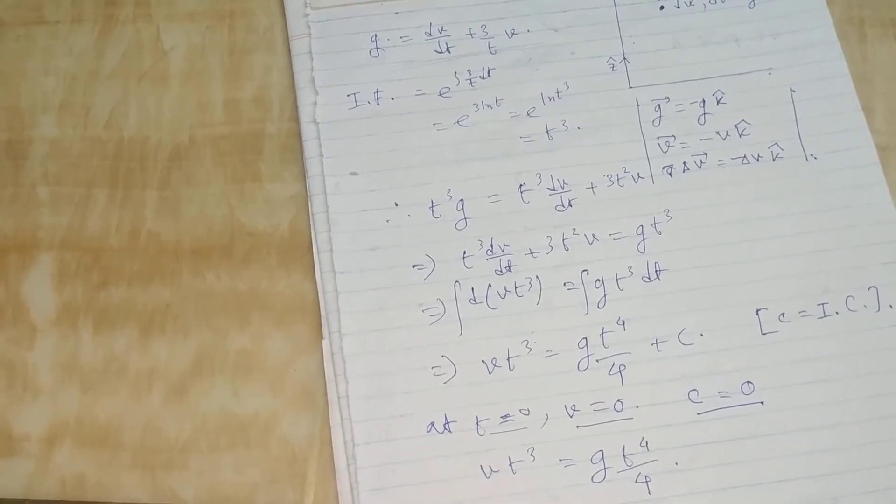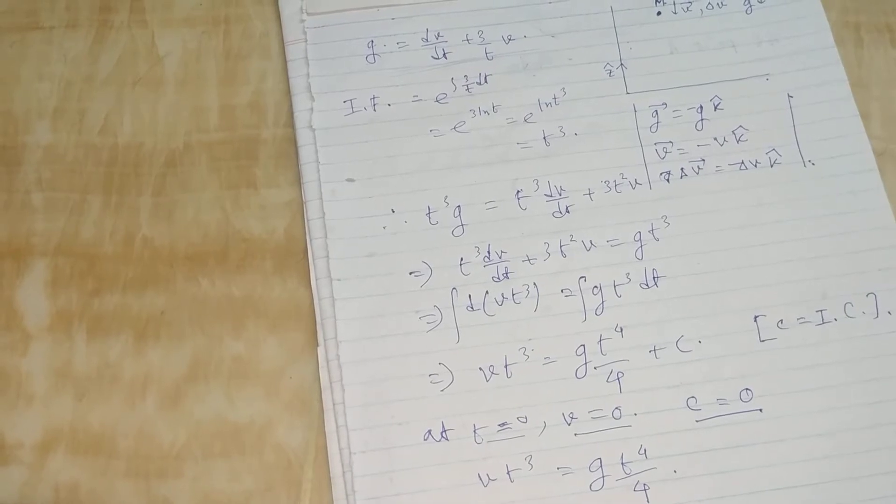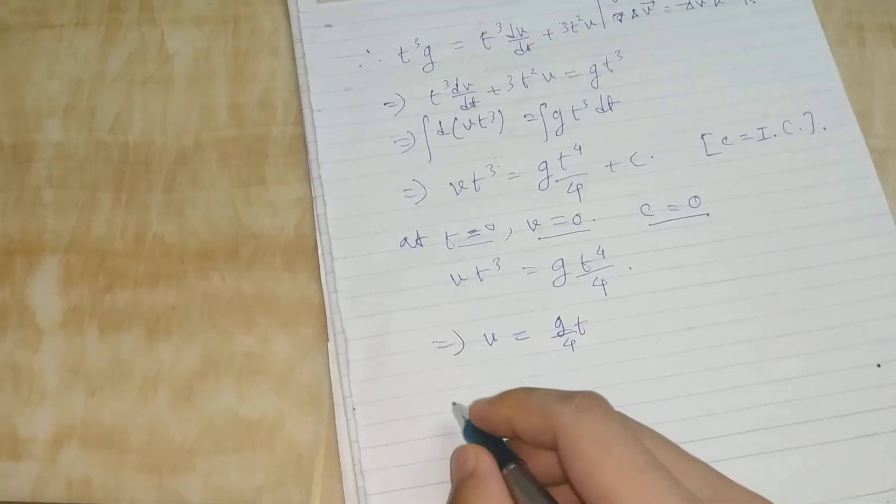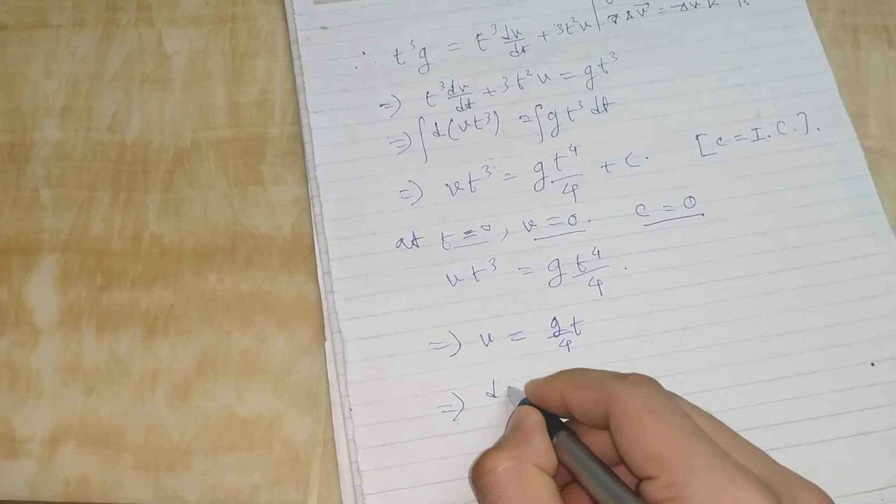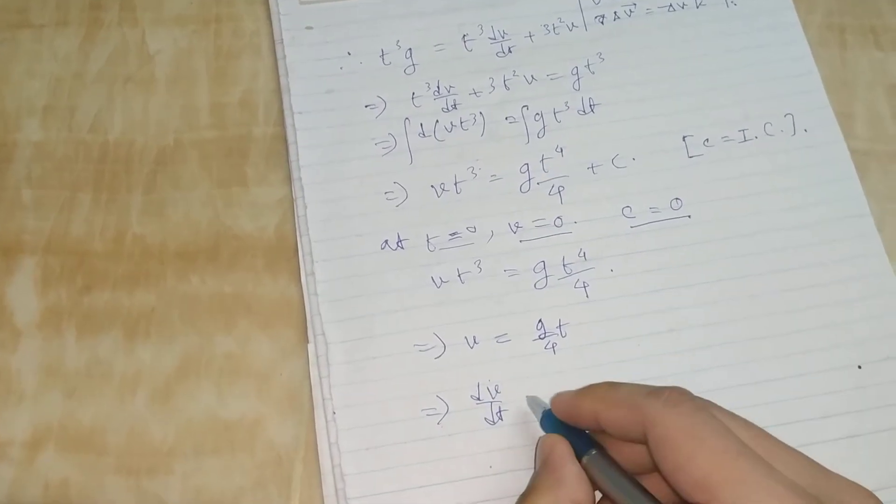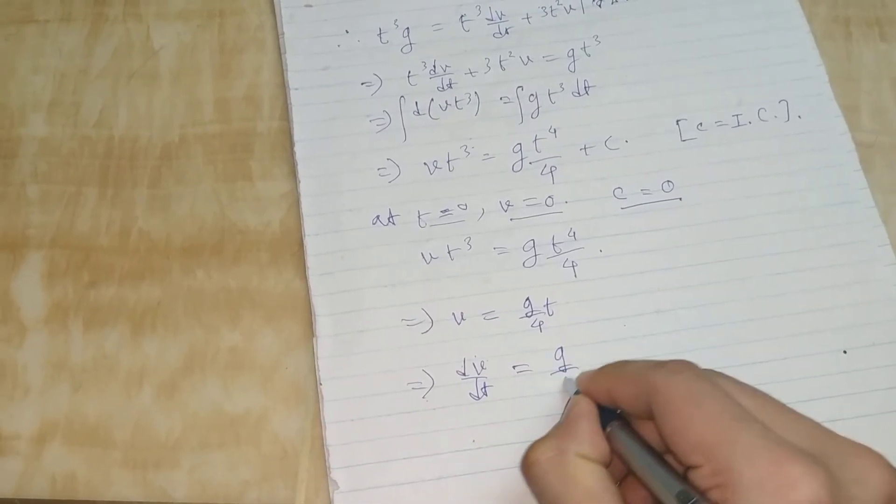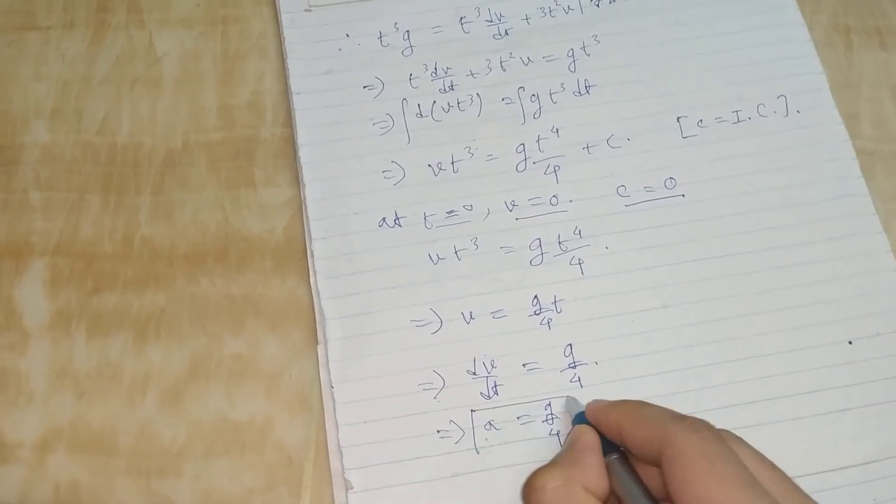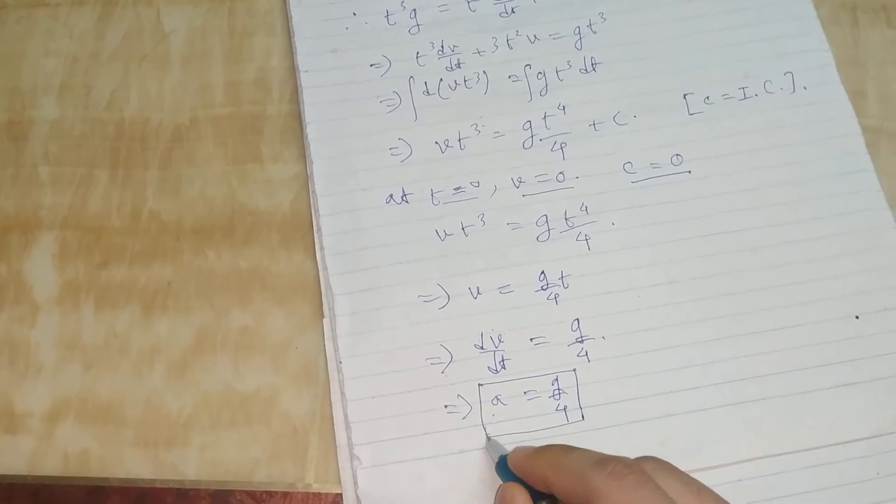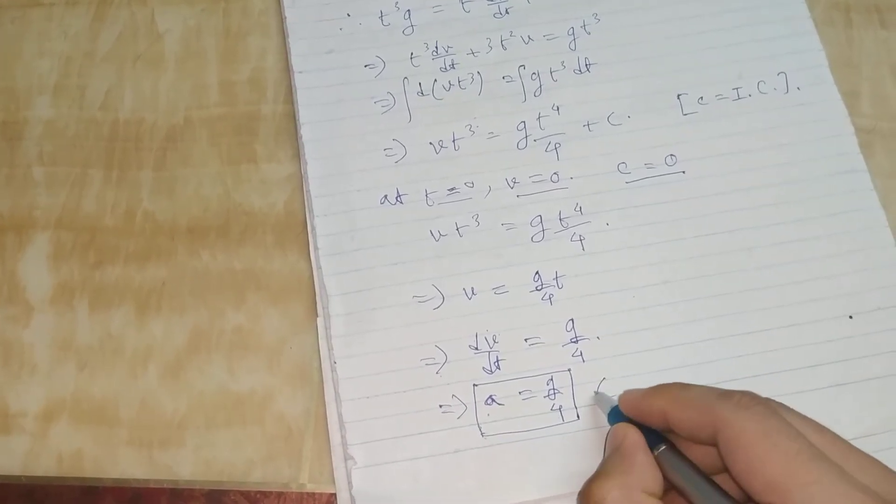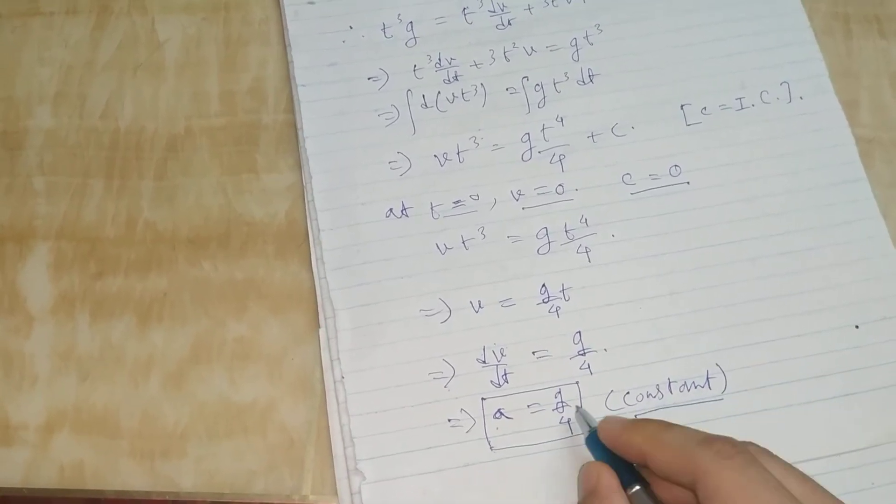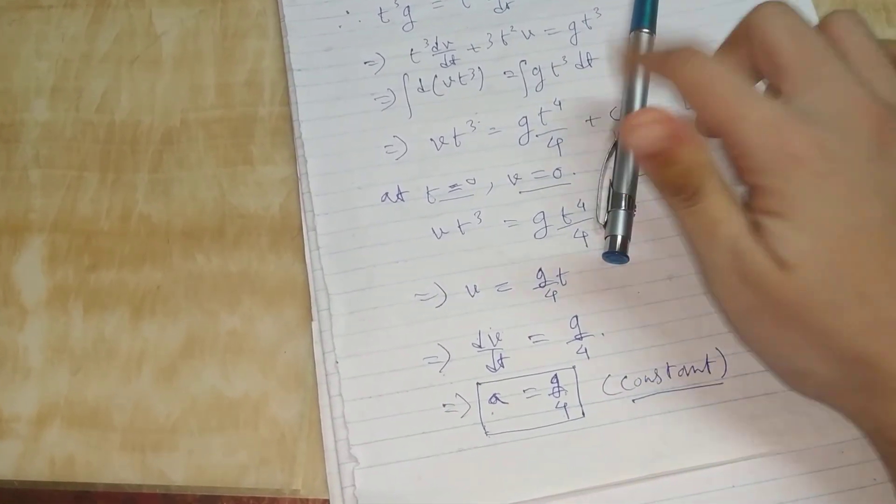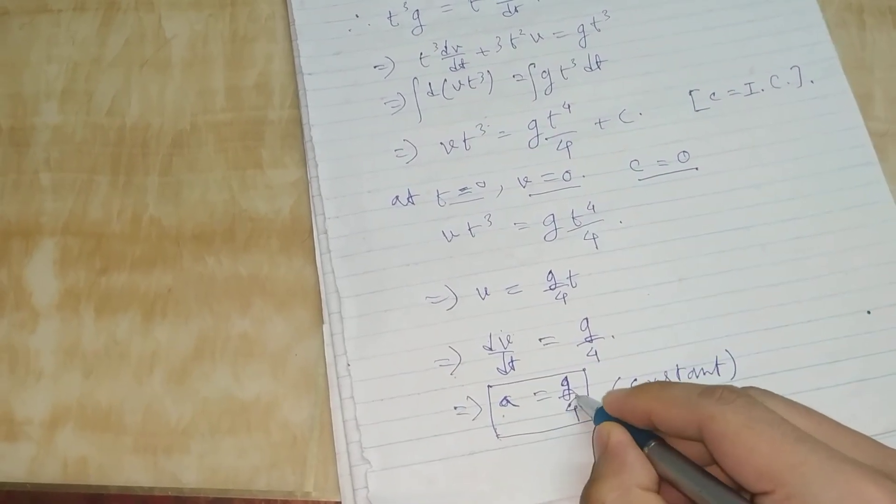For acceleration at any time, we will just differentiate it with respect to time and we will get a = g/4. So this is our final answer. It will be a constant. The acceleration at any time of that raindrop will be one-fourth of g, one-fourth of the acceleration due to gravity.